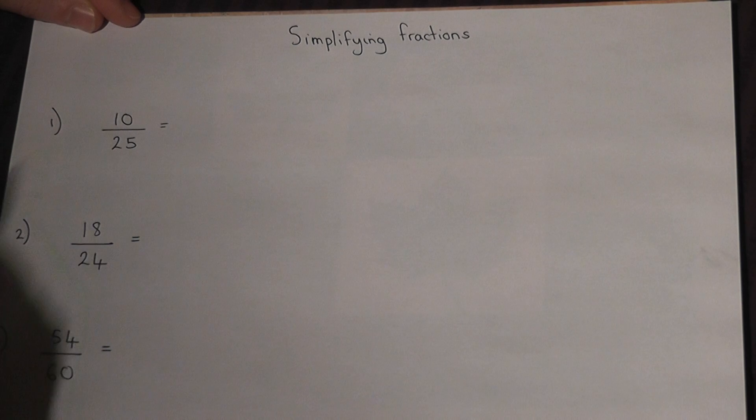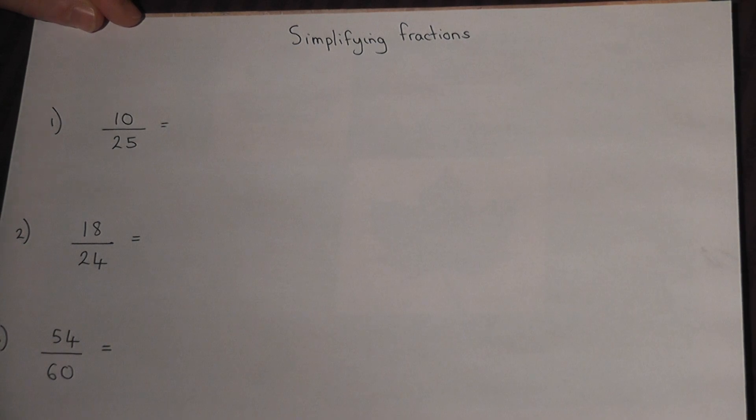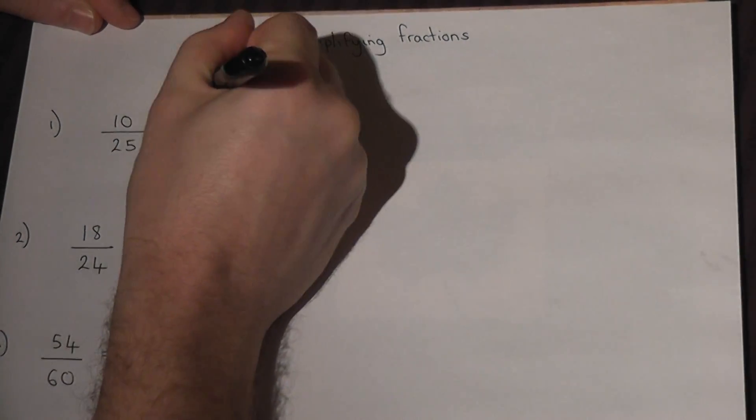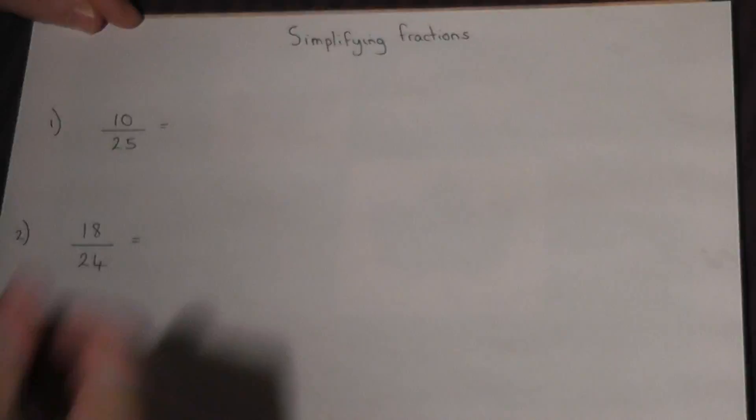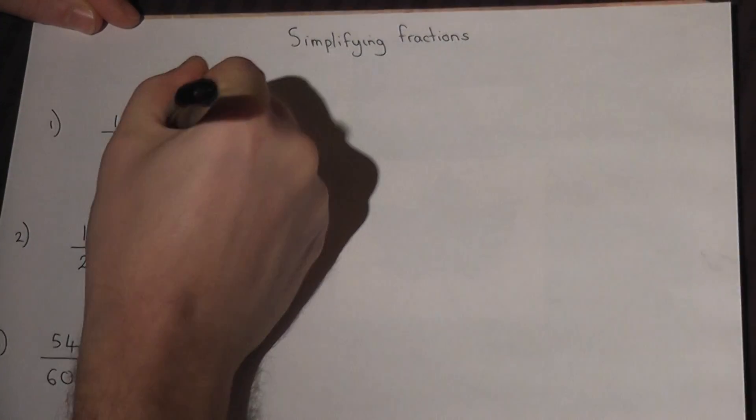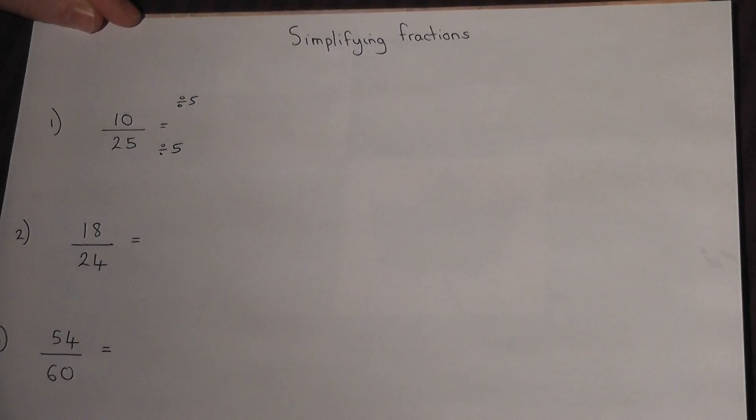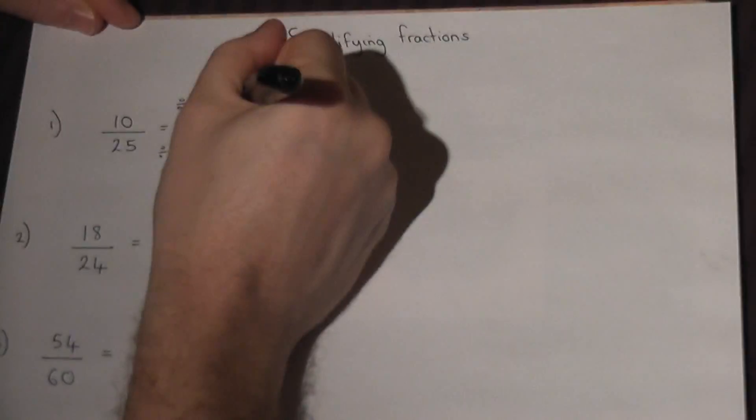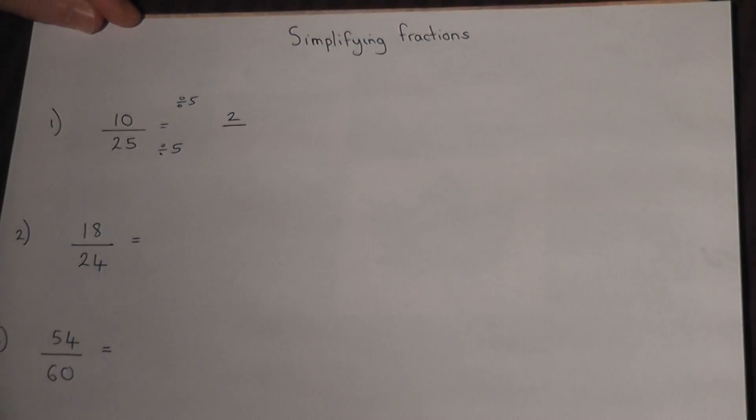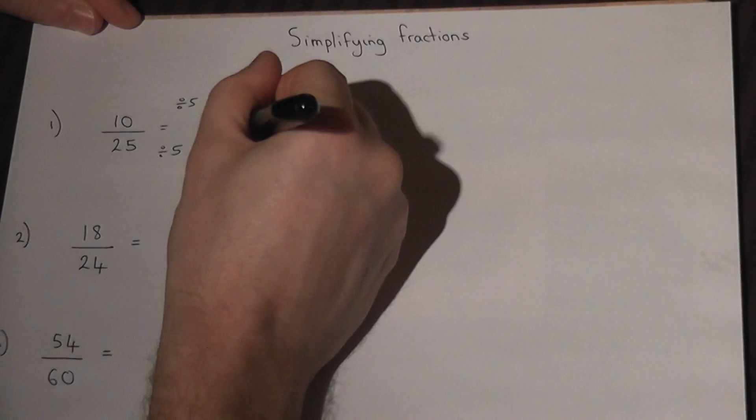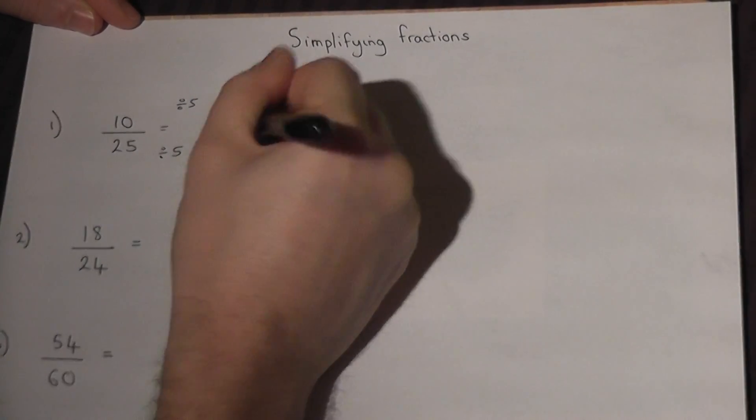Now when I see 10 and 25, they are both in the 5 times table, so I can divide the top and bottom by 5. Now 10 divided by 5 is 2, and 25 divided by 5 is 5, so that is an equivalent fraction.